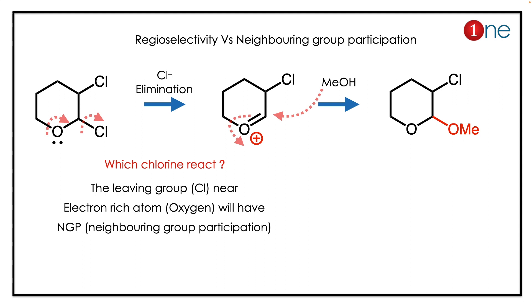So the substitution is favored by neighboring group assistance. The key concept is: whenever you have an electron-donating group or a mesomeric effect possibility, you should consider neighboring group participation assistance in the reaction.